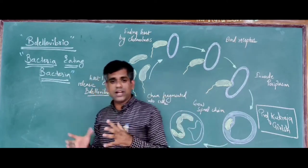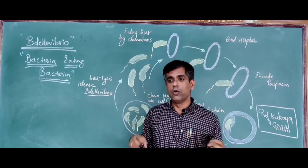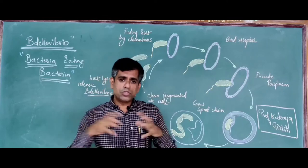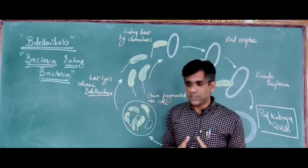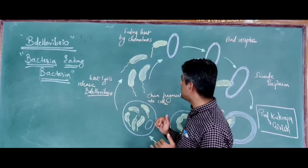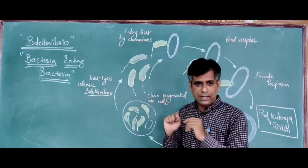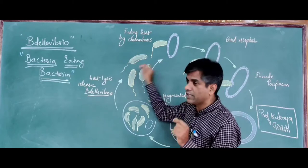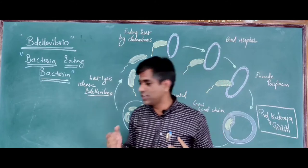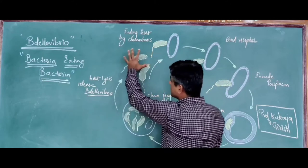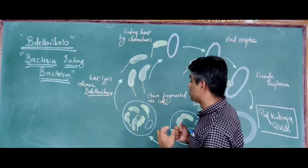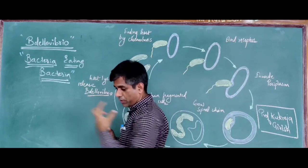Bdellovibrio actually occurs in two phases. There is a host-independent phase, which is very rare, and the most common phase, the host-dependent phase, where they occur in the form of gram-negative, comma-shaped, flagellated cells. The flagella here also has a sheath on its surface, which is uncommon in bacteria in general. The attack-phase cells are what actually attack other organisms.